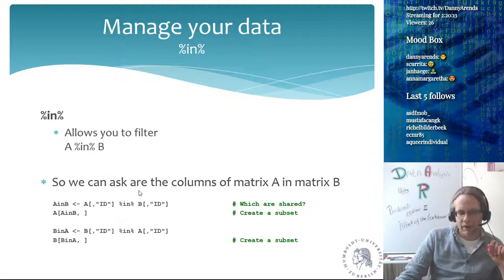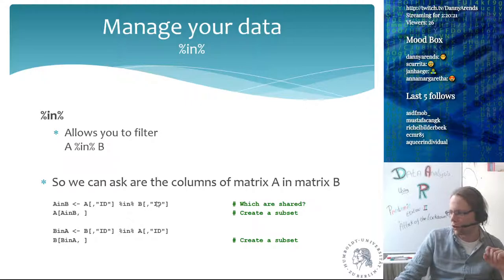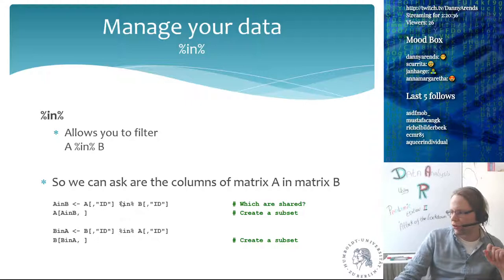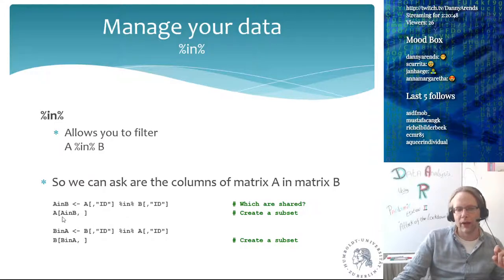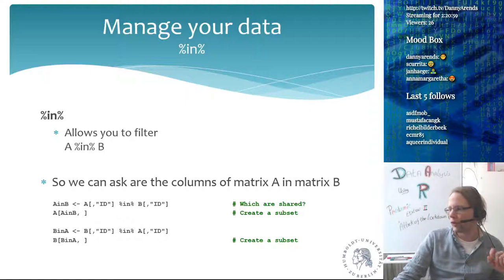Imagine I have two matrices, matrix A and matrix B. Both matrices have an ID column. I want to take all elements of matrix A which have a corresponding ID in matrix B. I can ask: which elements of A's ID column are in matrix B's ID column? This gives me a logical vector — TRUE/FALSE — for all elements in A, which I can use to create a subset of matrix A.